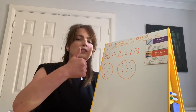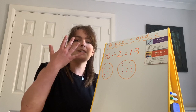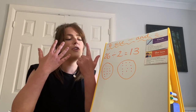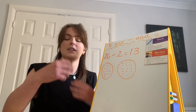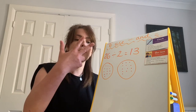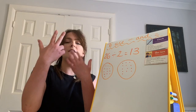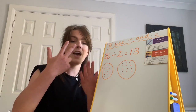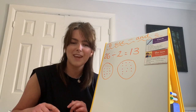Let's go: 2, 4, 6, 8, 10, 12, 14, 16, 18, 20, 22, 24, 26. So I had 10 fingers, then 3. So 10 add 3 is 13. And we've got the same answer.